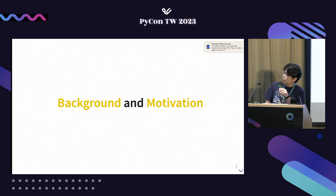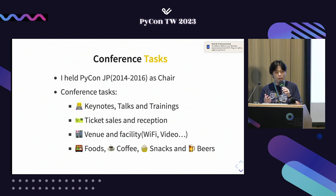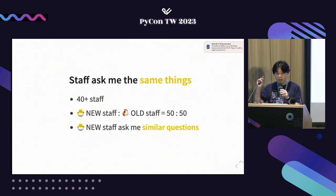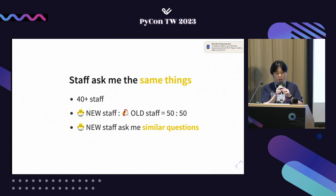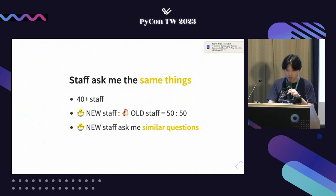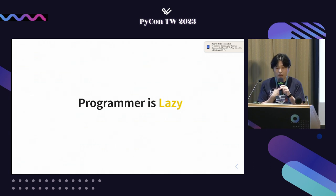Back to the main topic — background and motivation. I've held PyCon JP events as chairperson for several years. As you can imagine, there are lots of tasks to hold a conference: talk arrangements, ticket sales, venue management, facilities, food, coffee, snacks, and beers. Beer is important for me. The number of PyCon JP staff is over 40, and half of them are new staffs every year. New staffs ask me similar questions, and I give similar answers repeatedly.